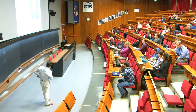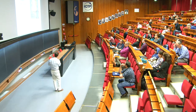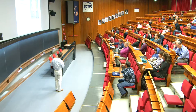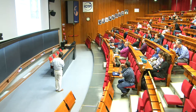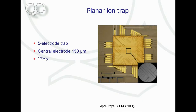Our trap is a generic five-electrode surface trap. This is a picture of the trap chip and a zoom-in of the five electrodes. The central electrode is about 150 micrometers wide, and this typically determines the distance between ion and surface — the width of your electrodes is typically equal to the ion-to-surface distance in a typical operating regime.